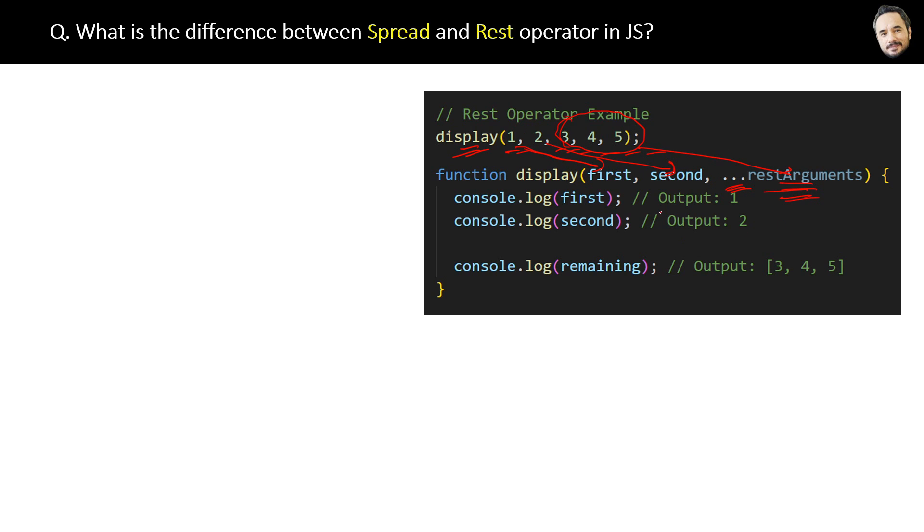Finally, the definition of rest operator is: the rest operator is used in function parameters to collect all remaining arguments in an array. Remember, it gives the rest of the arguments in an array.